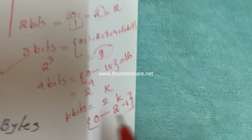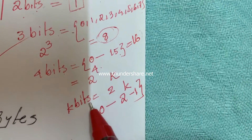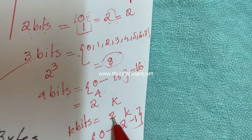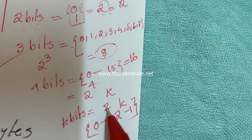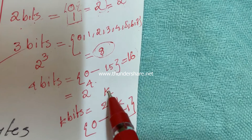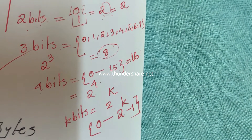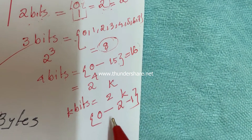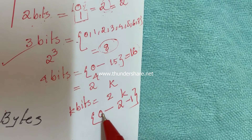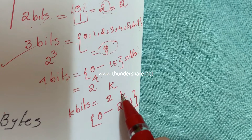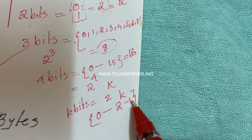Suppose we have k bits — then how many values are possible? A total of 2 raised to k different values are possible, and these values range from 0 to 2 raised to k minus 1.